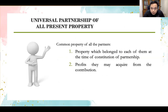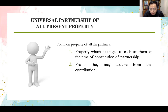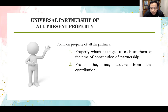In a universal partnership of all present property, all partners will have common property with respect to the property belonging to each of them at the time of the constitution of the partnership. The profits acquired from such contribution will also form part of the assets of the partnership. In summary, a universal partnership of all present property includes all properties of a partner at the time of the formation of the partnership and all the fruits or profits acquired from such contribution.